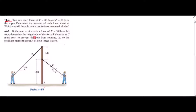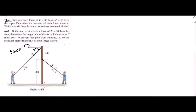To solve this problem, first I have to resolve the two forces into their components. For each of the forces, I have two components. For force P, I have one horizontal component and one vertical component. This angle is 45 degrees from the horizontal, so this angle is also 45 degrees. This component is P·cos45 and this component is P·sin45.